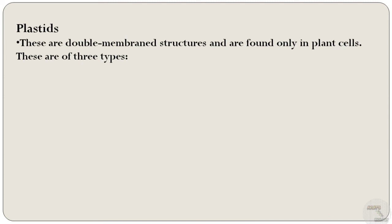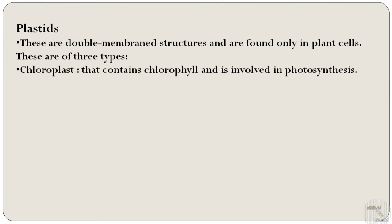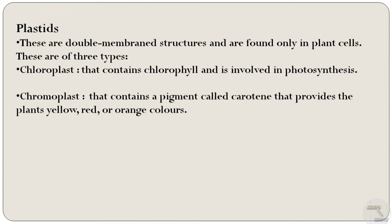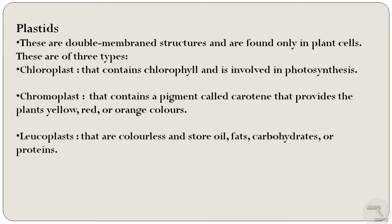Next are the plastids. These are double membrane structures found only in plant cells. Plastids are of three types: the first is the chloroplast, which contains chlorophyll and is involved in photosynthesis; the next is the chromoplast, which contains a pigment called carotene that provides plants yellow, red, or orange colors; and the last is the leucoplast, which is colorless and stores oils, fats, carbohydrates, or proteins.